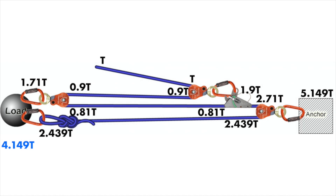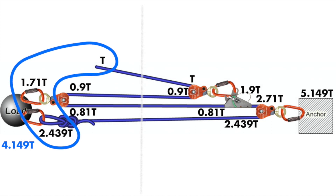Checking our calculations by drawing a line down the middle of our system: on the left, the tensions leaving our system are the haul line, pulley, and figure of 8 attached to our load, adding up to a total of 5.149T. On the right, tension only leaves our system at the anchor, which we've already calculated as 5.149T. With the tensions on the left and right sides of our system being equal, we can be reasonably confident our calculations are correct.